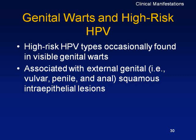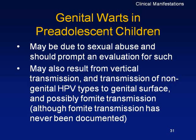If HPV occurs in pre-adolescent children, it might be a sign of sexual abuse or vertical transmission — which is possible but rare. Regarding fomite transmission: it is considered possible, especially given viral shedding. If the virus is being released in tears, vaginal secretions, semen, or saliva, fomite transmission could take place, though it is difficult to document and prove.